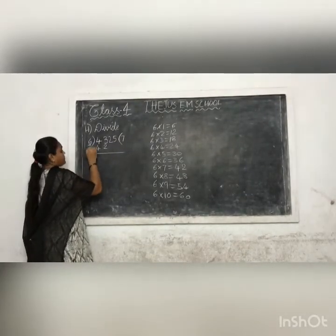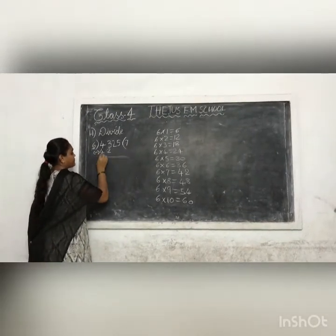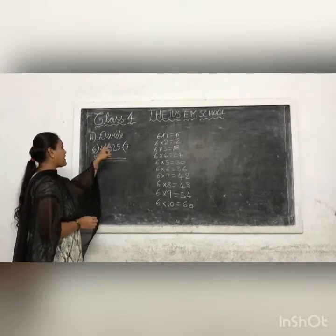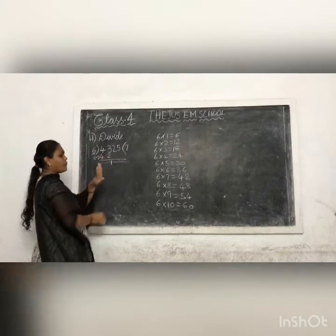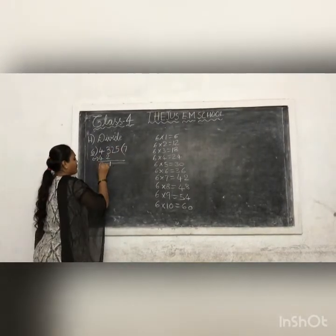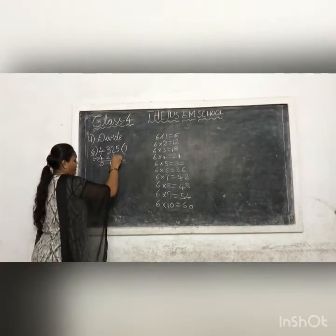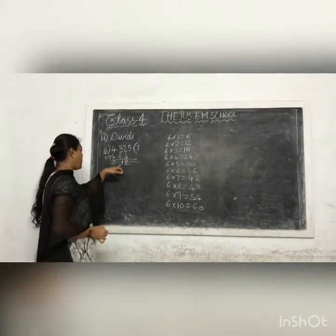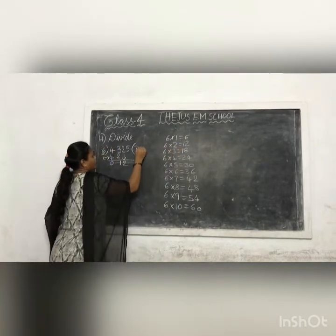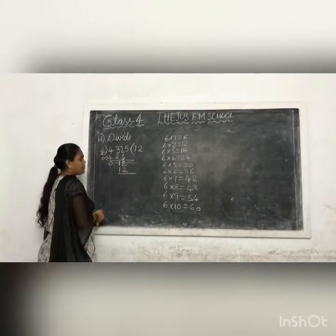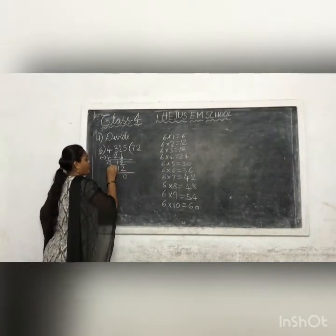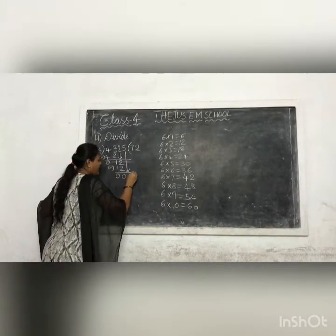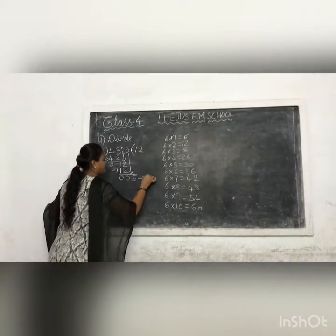And we will do subtraction here. Subtraction means take fingers less fingers. First number we take 3 fingers, less 2 fingers, remaining fingers is 1. 4 minus 4: take 4 fingers less 4 fingers, answer is 0. Next we take down the number 2. So 12 in the 6th table is 2 times. 2 times 6 is 12. So 2 minus 2 is 0, and 1 minus 1 is 0. And the next number brought down is 5. This is the remainder.